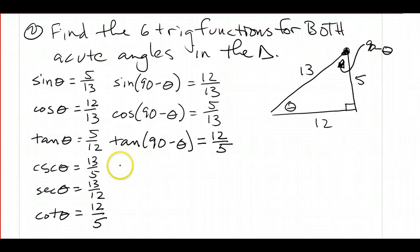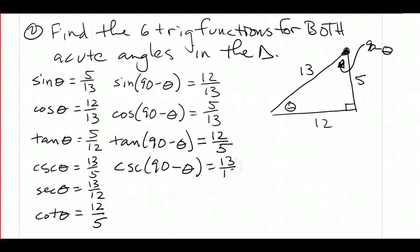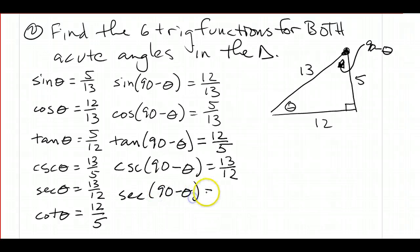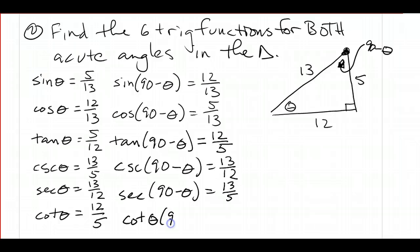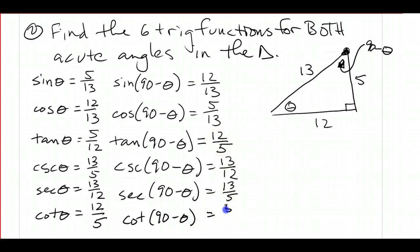Next I want the cosecant of 90 minus theta — that's the reciprocal of the sine — so that's going to be 13 over 12. The secant of 90 minus theta is the reciprocal of the cosine, so that's 13 over 5. And the cotangent of 90 minus theta is the reciprocal of the tangent, so 5 over 12.